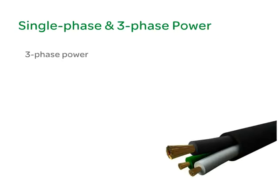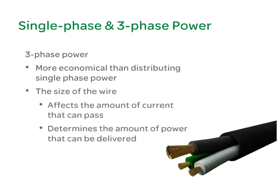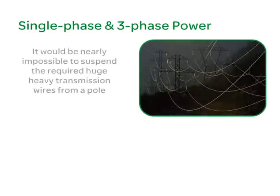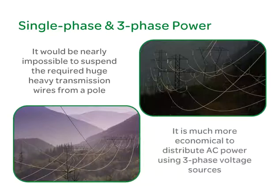Generating and distributing three phase power is more economical than distributing single phase power. Since the size of the wire affects the amount of current that can pass, it also determines the amount of power that can be delivered. If a large amount of power were distributed as single phase, huge heavy transmission wires would be needed and it would be nearly impossible to suspend them from a pole. It is much more economical to distribute AC power using three phase voltage sources.